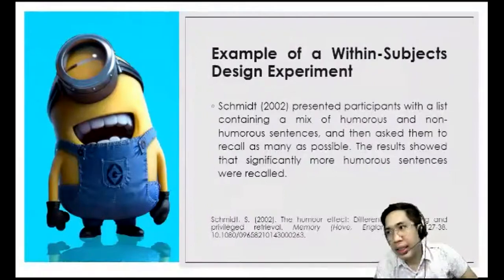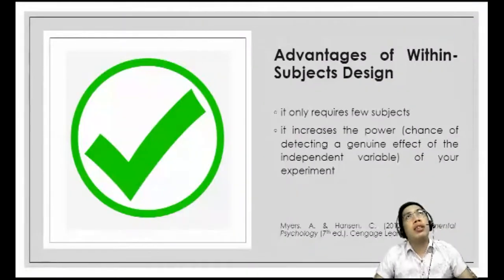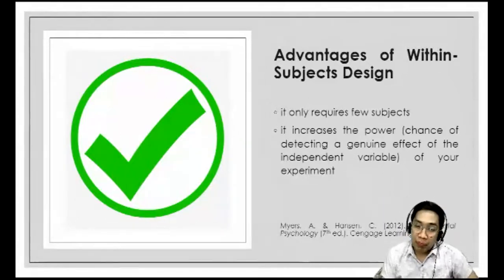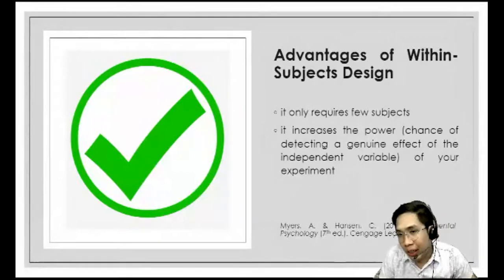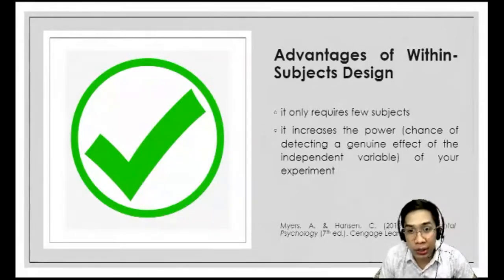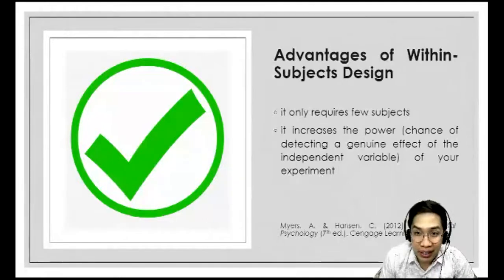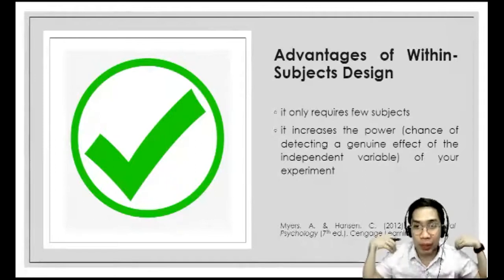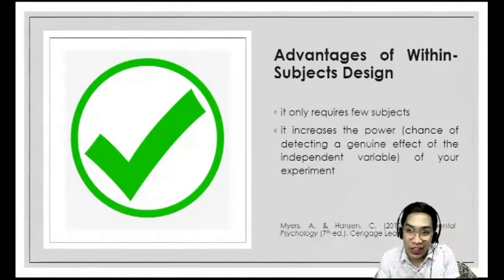Why do we use this design? The first advantage of within-subjects design is it requires fewer subjects. Unlike between-subjects design where you multiply the number of subjects by the number of conditions — needing 60 subjects for two conditions of 30 each — in within-subjects design the same 30 subjects are used across all conditions. As conditions increase in between-subjects design, more subjects are needed, whereas within-subjects always uses the same group.